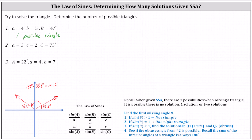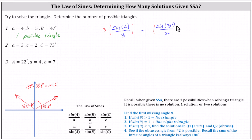Now let's take a look at number two. The length of side A is three, the length of side C is two, and angle C equals 73 degrees. Let's again determine angle A using the law of sines. We have sine of angle A divided by three equals sine of 73 degrees divided by two. Solving for sine A by multiplying both sides by three, we have sine A equals three sine 73 degrees divided by two.